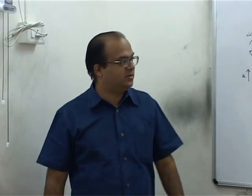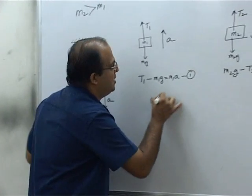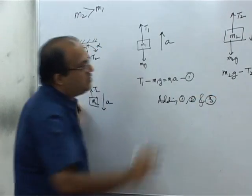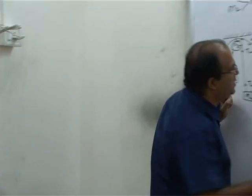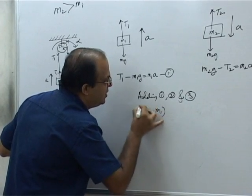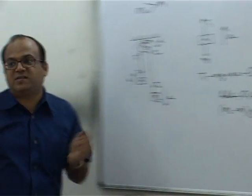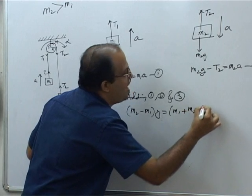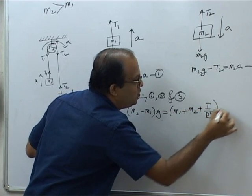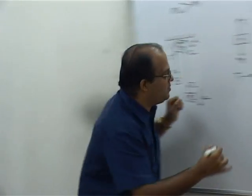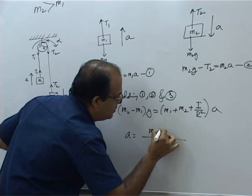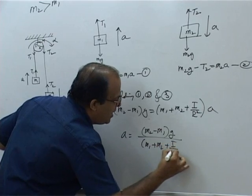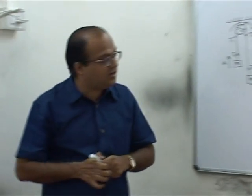That is equation number 3. If you add all the 3 equations, adding 1, 2, and 3, all the tensions will vanish away. So finally we will be left with M2 minus M1 into G is equal to M1 plus M2 plus I by R square into A. So A becomes M2 minus M1 into G by M1 plus M2 plus I by R square. So this is the extra term that you have got.